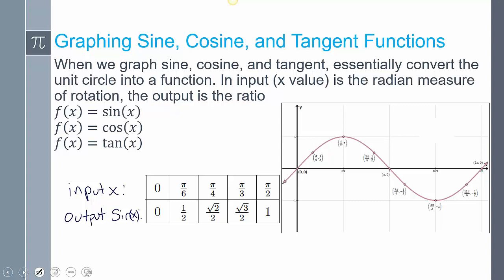Essentially what we're doing is converting the unit circle into a function. My x values become the input, which are the radians. Technically you can do it in degrees, but we're just going to focus on radians. The output is the ratio that's on the unit circle. For example, this models my sine of x function. When you plug in 0 radians, if you look at your unit circle at 0 radians on sine, it's 0. At pi over 6 radians, my sine is 1 half. At pi fourths, it's radical 2 over 2. At pi thirds, it's radical 3 over 2. And pi halves, it's 1.